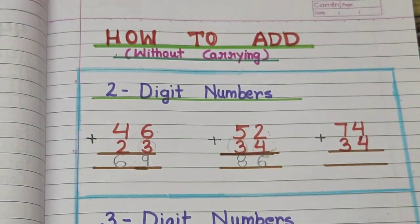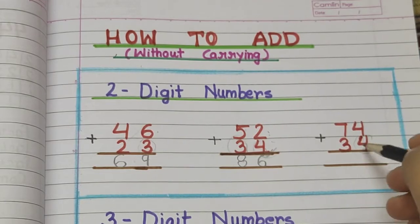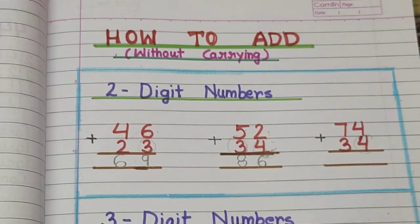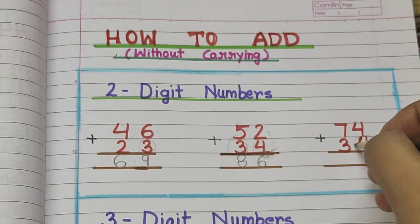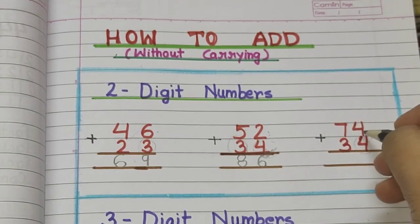Bahut easy hai. Bas aapko dhyan rakhna hai ki niche wale number jo bhi hai, utni hi hume fingers nikaalne hai, aur upar wale number ke just after wale number se hume count karna hai.